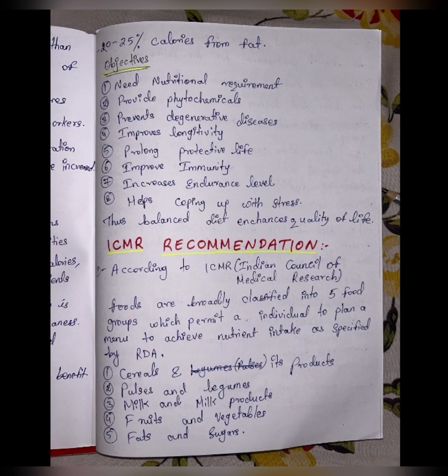ICMR — Indian Council of Medical Research — recommends that foods are broadly classified into 5 food groups, which permit an individual to plan a menu to achieve nutrient intake as specified by RDA.